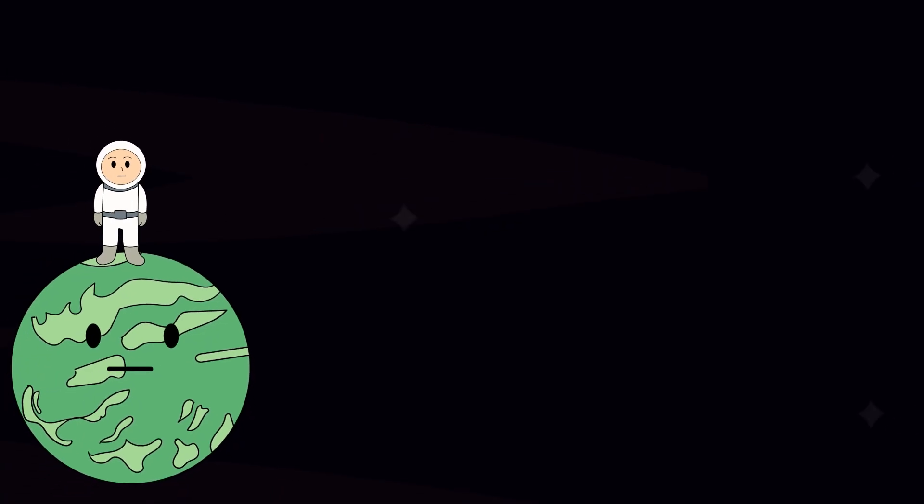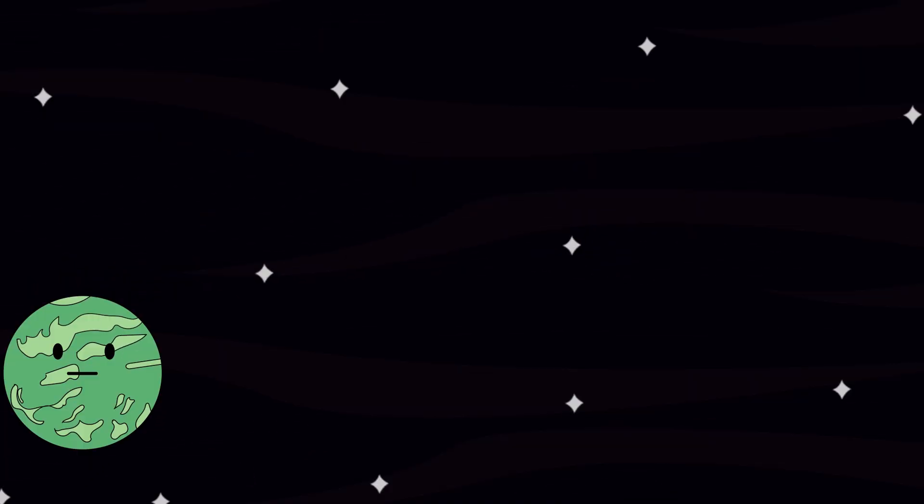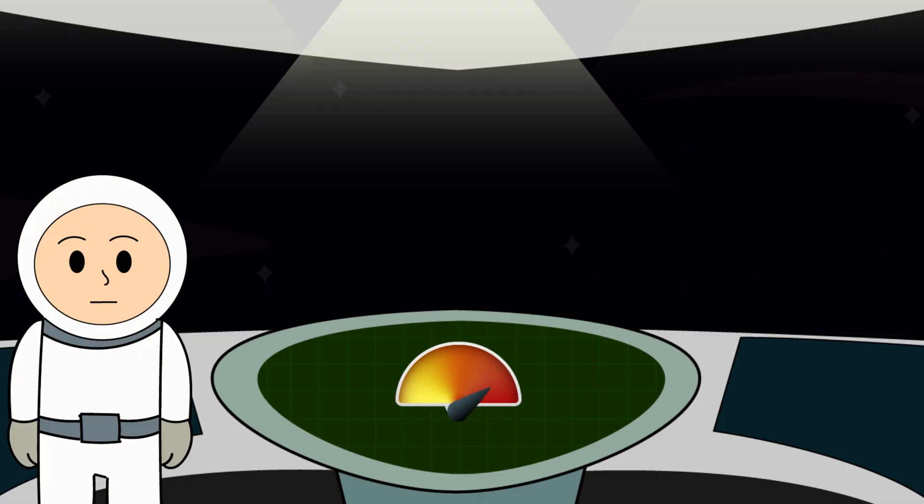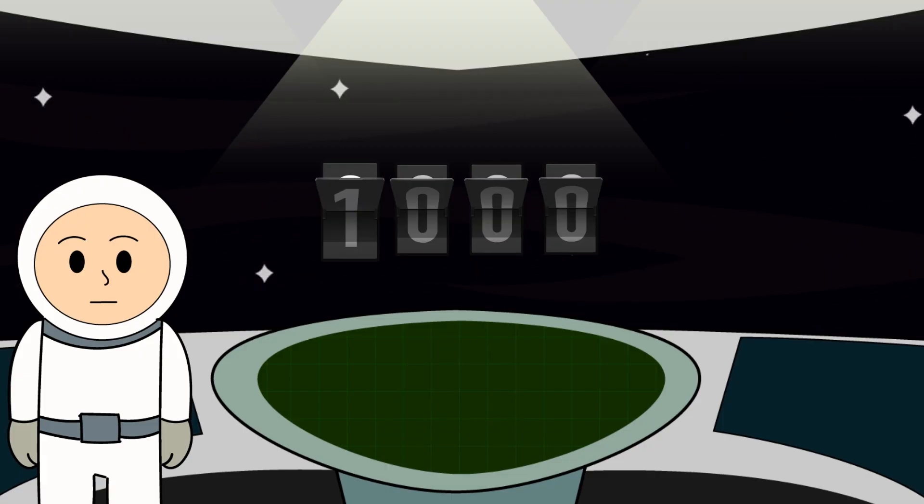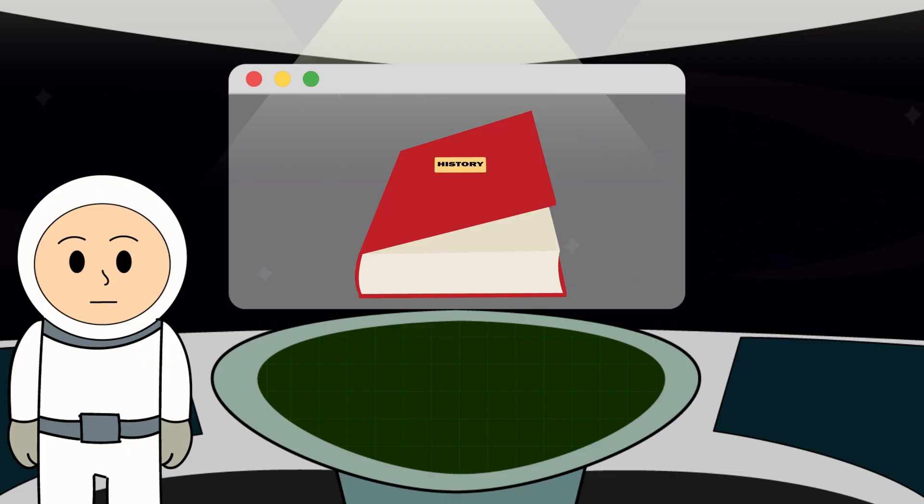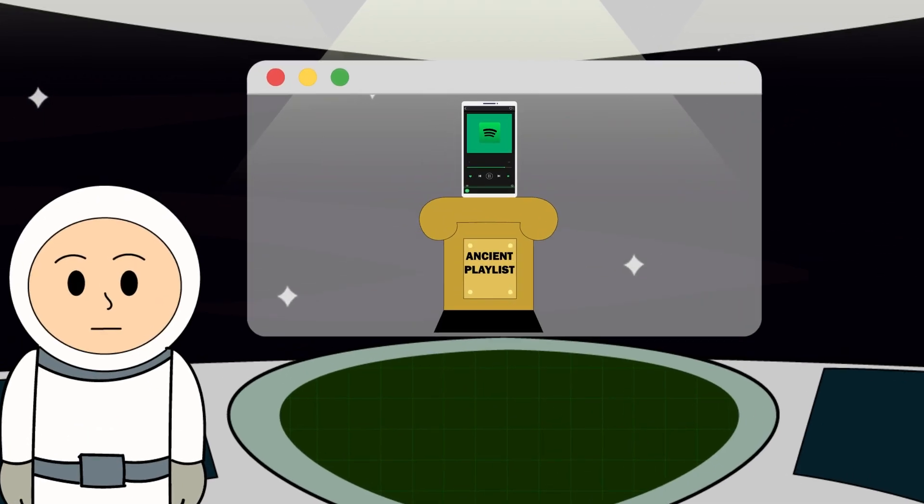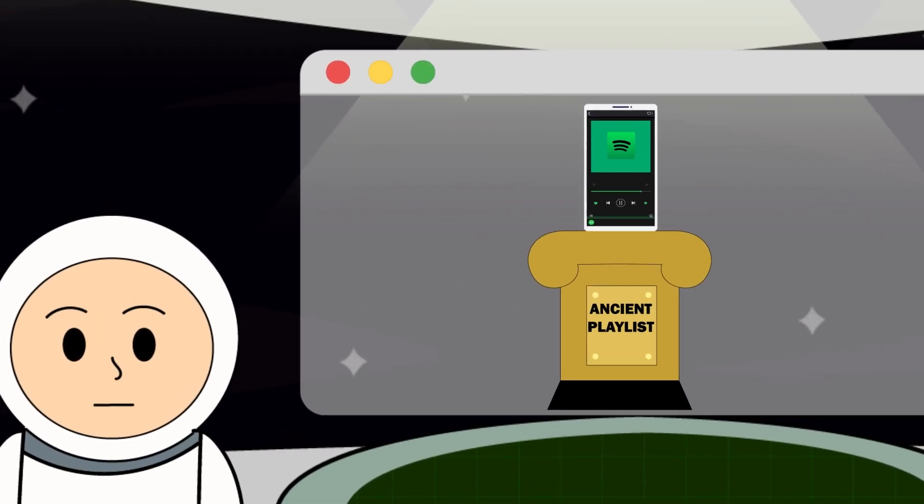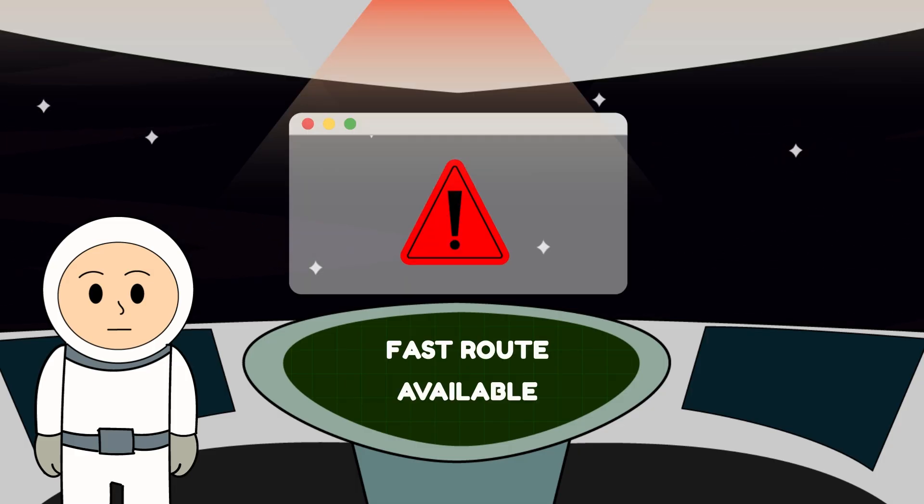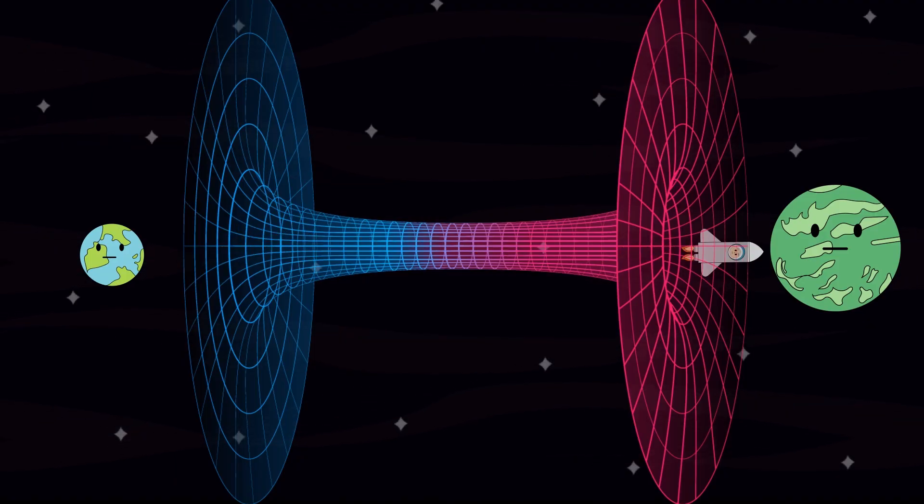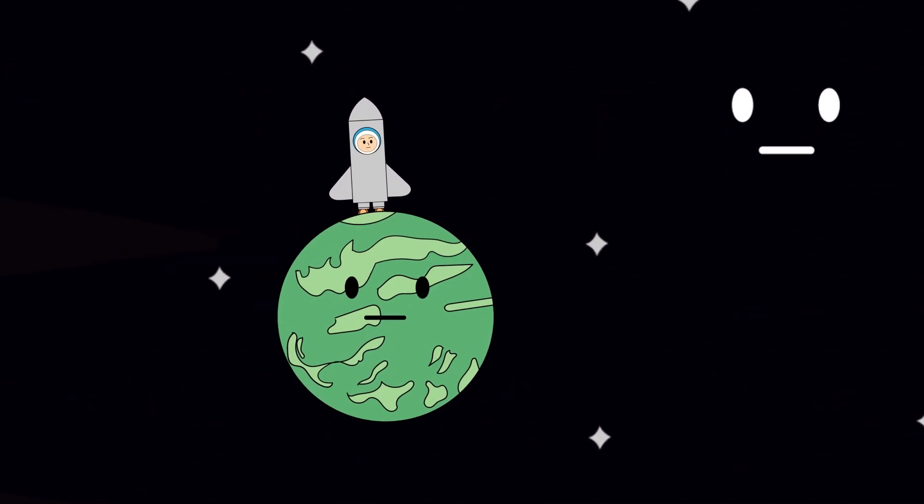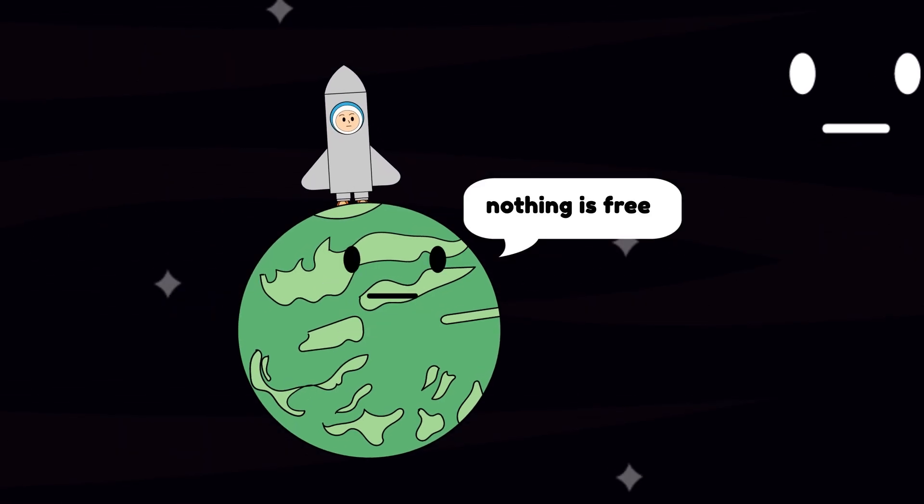Before we talk about the planet itself, let's acknowledge how absurd it is that you're standing here at all. Kepler-22b is 635 light-years away, which means that even if your ship could cruise along at 20% the speed of light, the journey would still take more than 3,000 years. Long enough for civilizations to rise, collapse, and be forgotten. For languages to die out. And for your Spotify playlists to become priceless archaeological artifacts. So yes, you cheated. Warp drives, space-time shortcuts, reality-bending technology that physics hasn't signed off on. However you arrived, the universe noticed. And physics, as a rule, doesn't forgive shortcuts. Keep that in mind as we continue, because this planet is about to collect its toll.